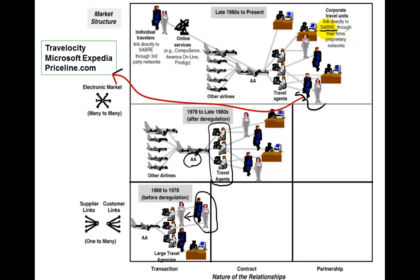Sabre is one of the earliest online reservation systems. They could sell tickets not just for one airline but for multiple airlines, so American Airlines could sell tickets for other airlines through travel agents who had a Sabre terminal in their office. American Airlines actually for a few years was making more money selling other airlines' tickets than flying airplanes and carrying passengers.